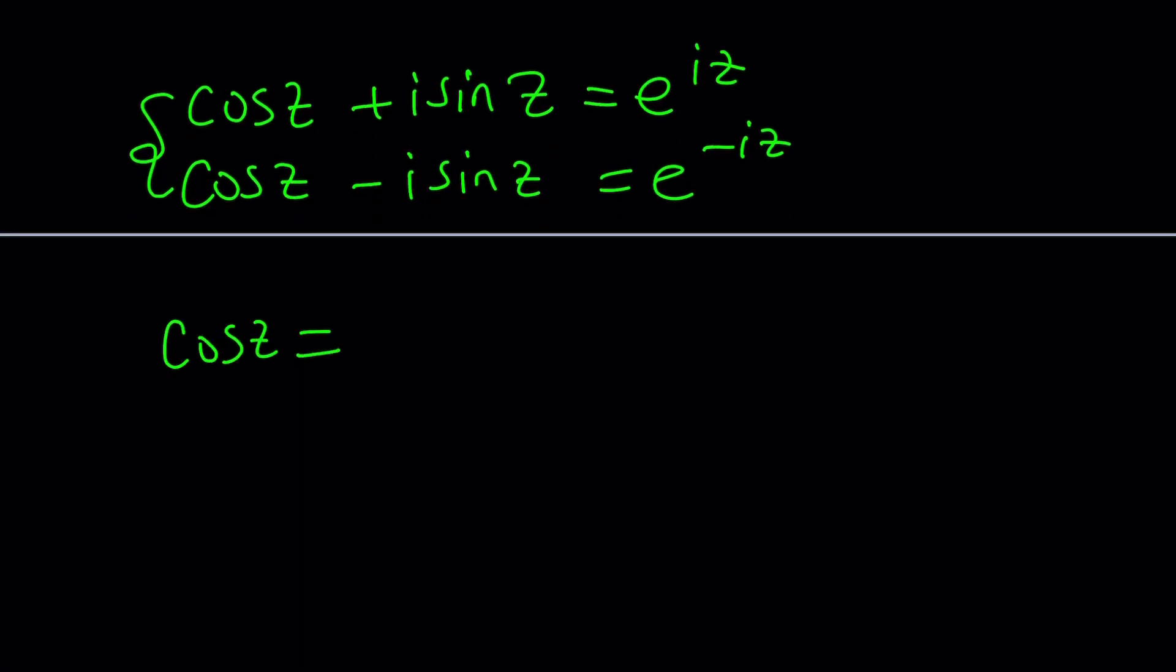So, this basically allows you to solve any trigonometric equation when z is not a real number. Okay? So, this is cosine z and sine z will be e to the iz minus e to the negative iz divided by 2i. You just do the math and you'll get the same answers.